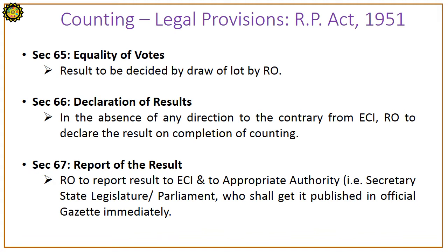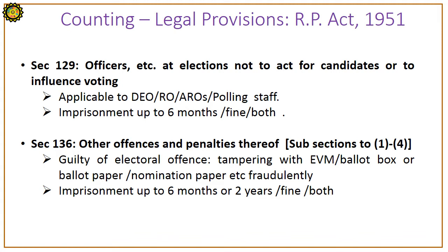Section 65 is about equality of votes: if two or more candidates have an equal number of votes, the result will be decided by draw of lot by the Returning Officer. Section 66 is about declaration of results: in the absence of any direction to the contrary from ECI, the Returning Officer is to declare the result on completion of counting. Section 67 is about report of the result: the Returning Officer to report the result to ECI and to the appropriate authority, i.e., Secretary of State Legislature or Parliament.